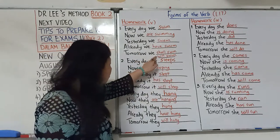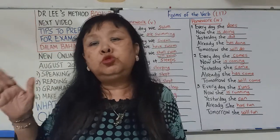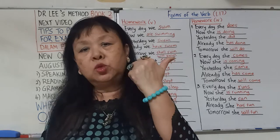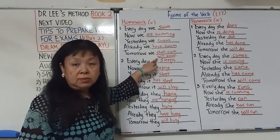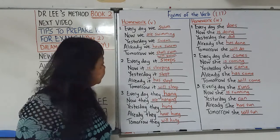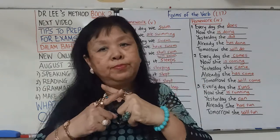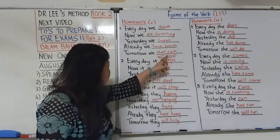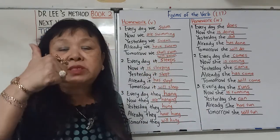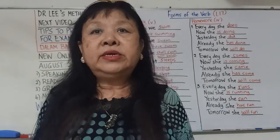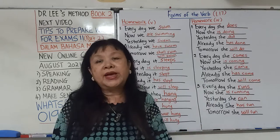Tomorrow we shall swim，tomorrow we will swim。Tomorrow是明天未来词，在语法我们叫它simple future tense。Simple future tense的I跟we很特别，I跟we可以用shall，也可以用will。但是you、they、he、she、it，只能够用will，我们不用shall。